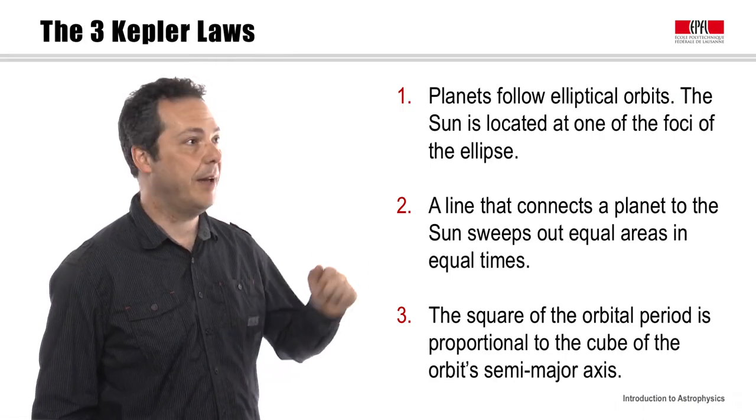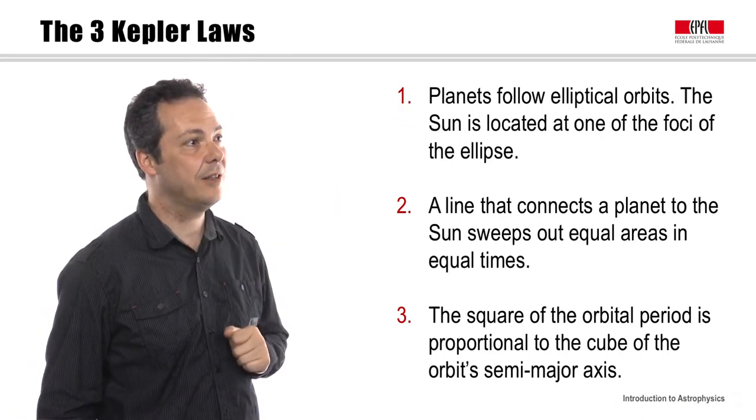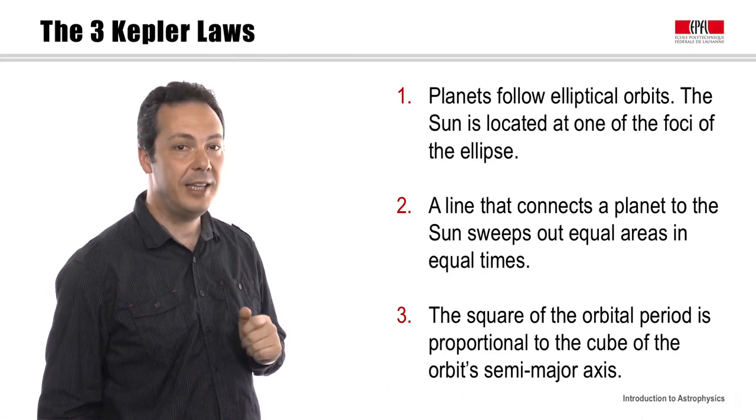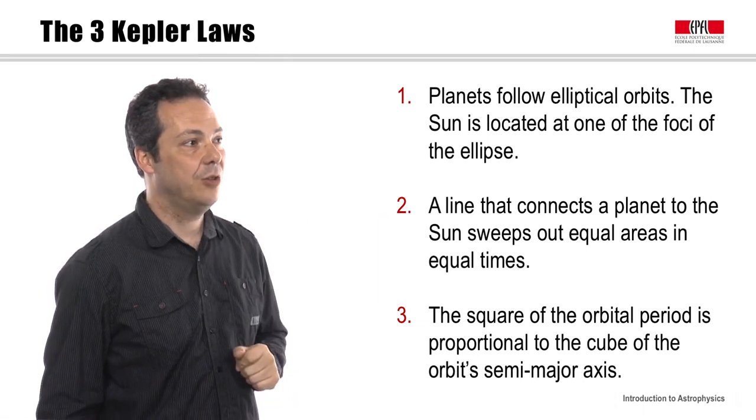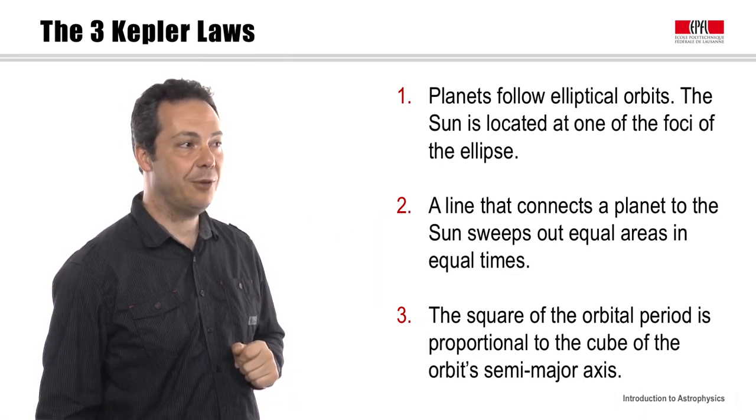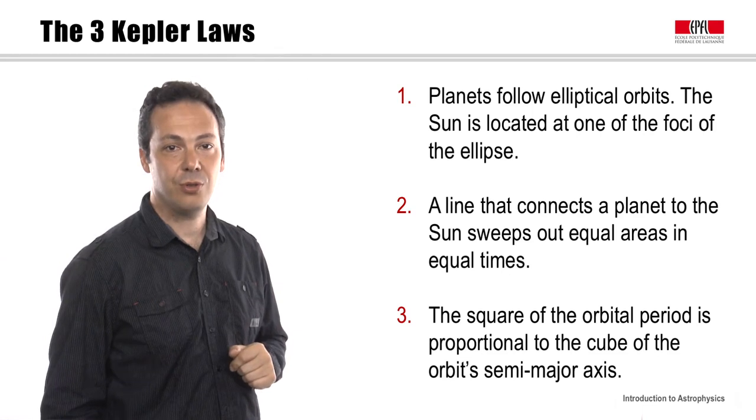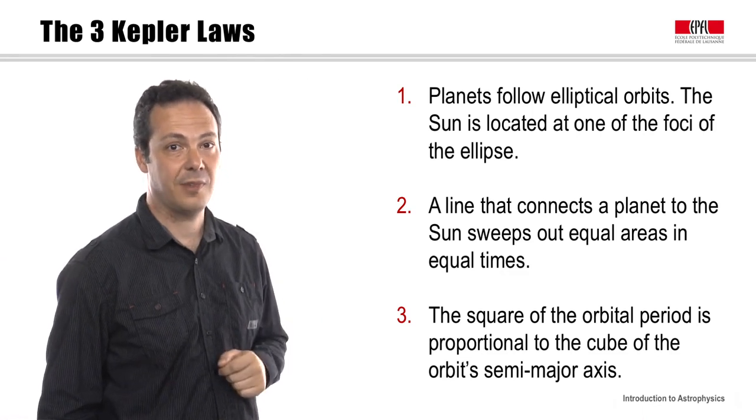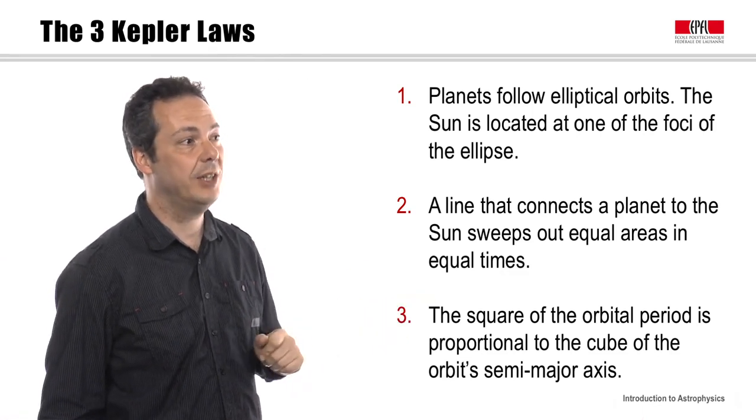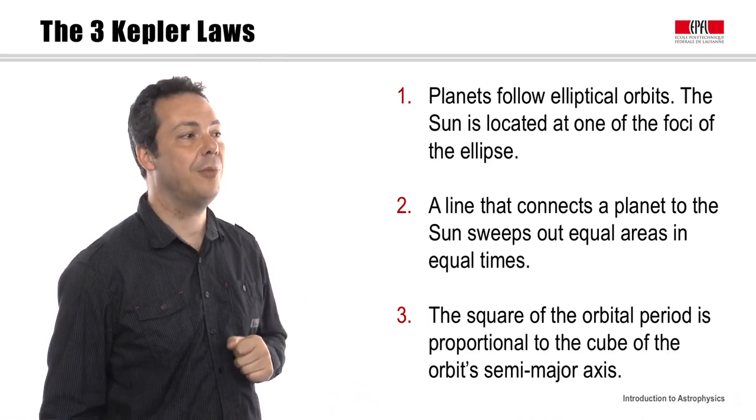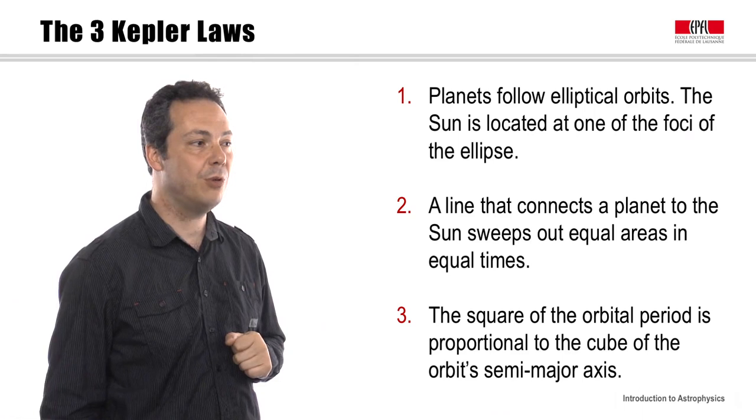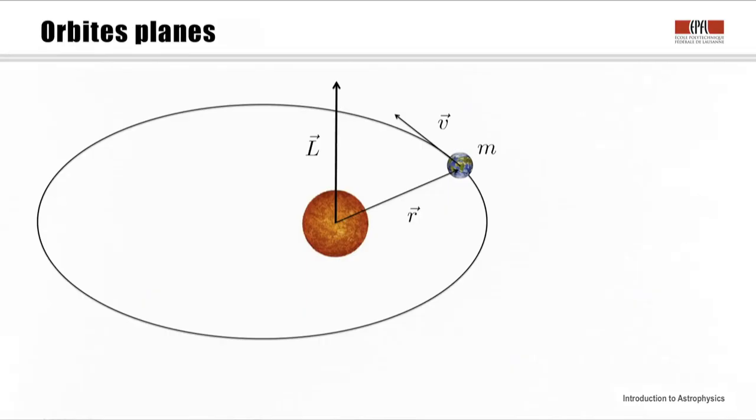What do Kepler's laws say? The first one tells us that planets follow flat and elliptical trajectories with the Sun at one of the foci. The second one tells us that the radius vectors sweep out equal areas during equal intervals of time. Finally, the third one, maybe the most important in regard to astrophysics, tells us that the square of the orbital period is proportional to the cube of the semi-major axis of its orbit.